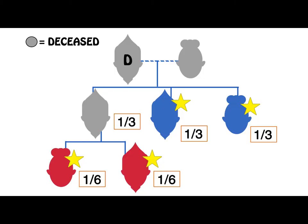An example for scenario two is as follows. Dee dies intestate. His wife and one of his children have predeceased him. He is therefore survived by two children and two grandchildren. Dee's estate would be divided between his three children and they would receive a third each. Two of his children will inherit their third. As one of his children has predeceased him but has left descendants, those descendants — the grandchildren of Dee — will, through representation, take the place of their father and inherit one-sixth each.